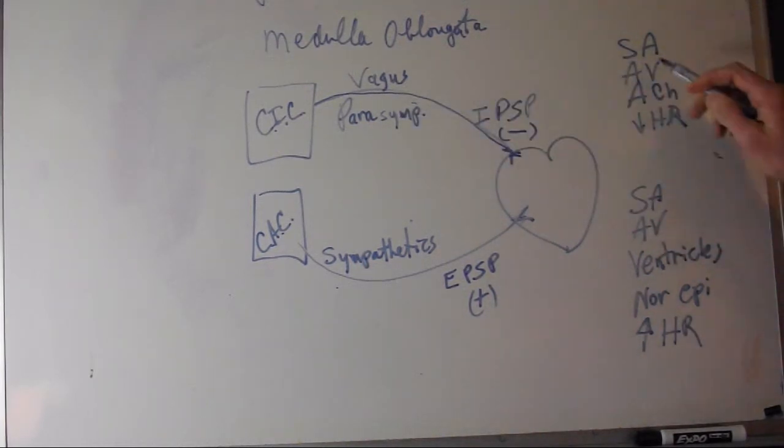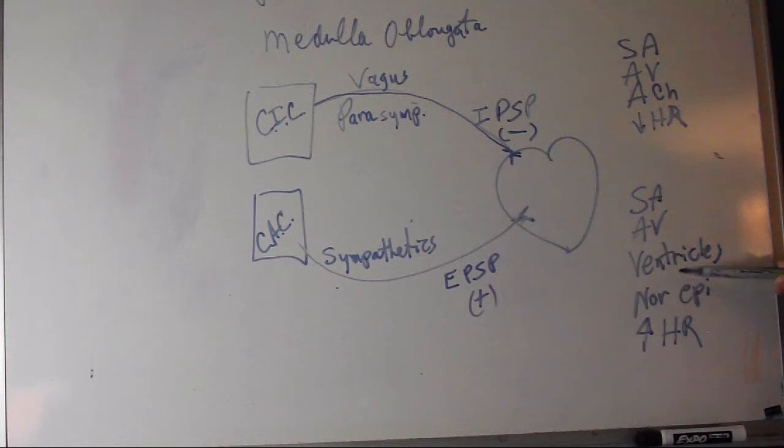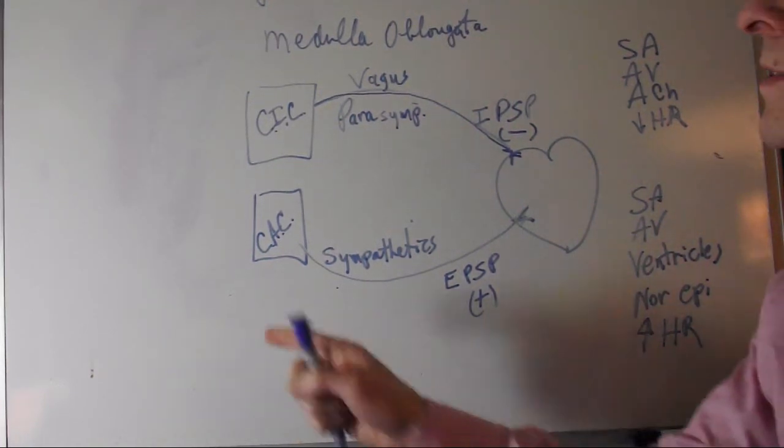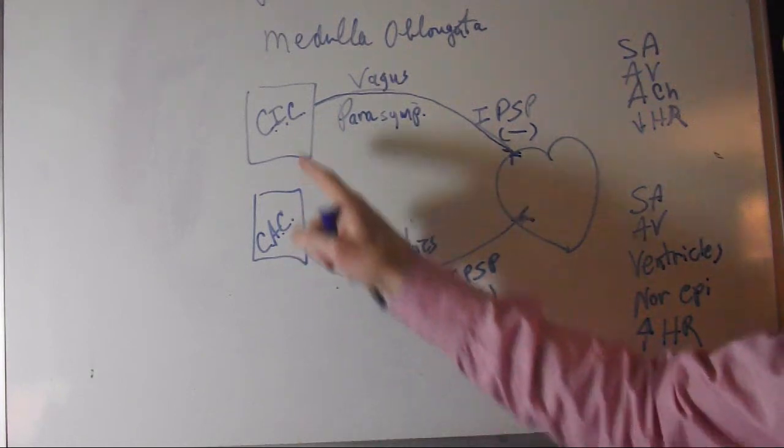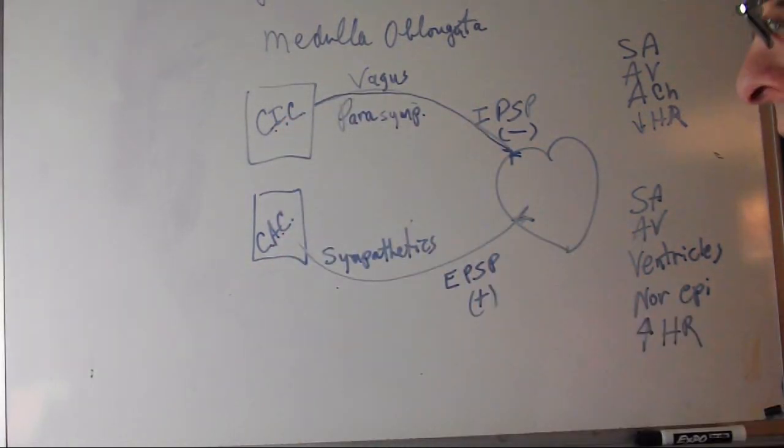Note that the parasympathetics have very poor effect on the ventricles, while the sympathetics have a greater effect on the ventricles. The centers are named for their effect on the heart: inhibitory and acceleratory.